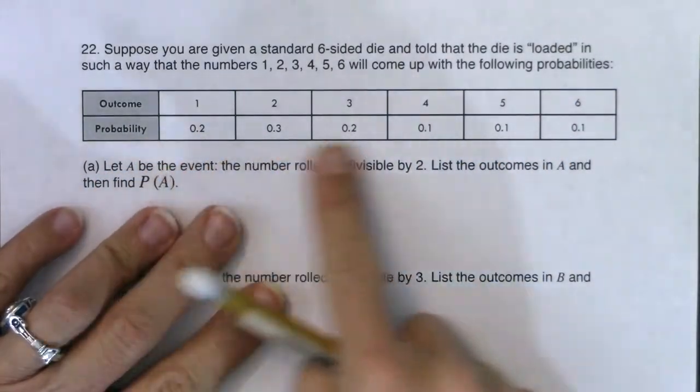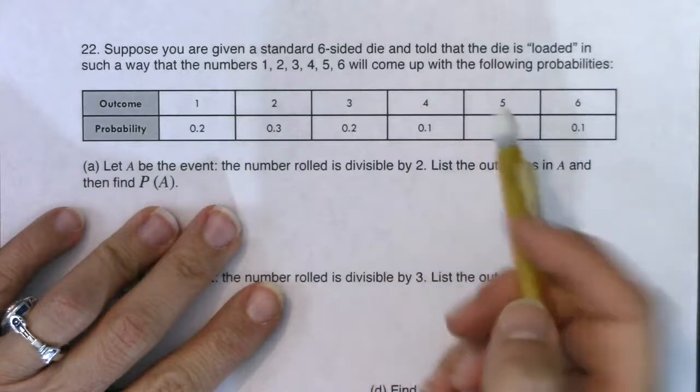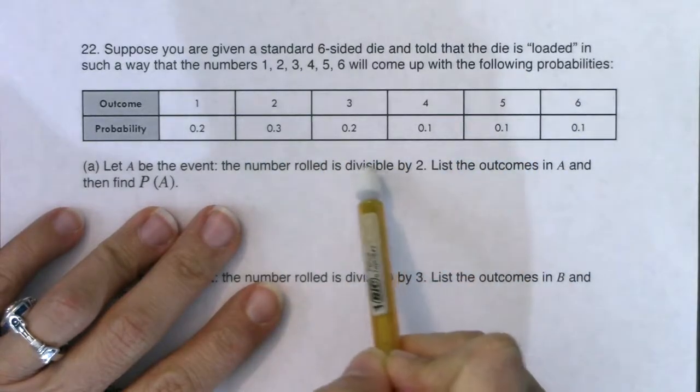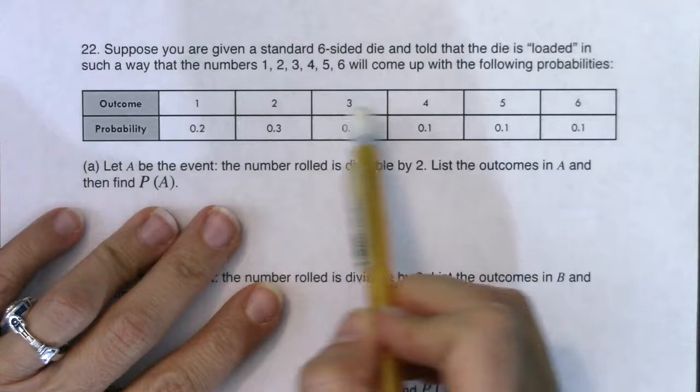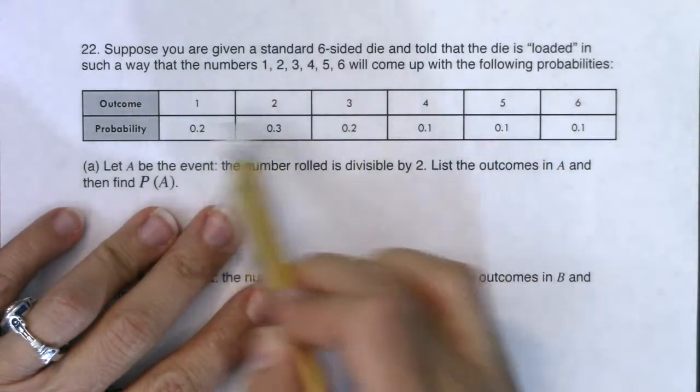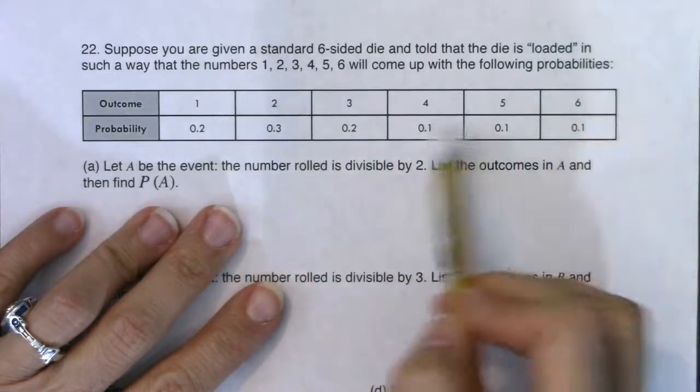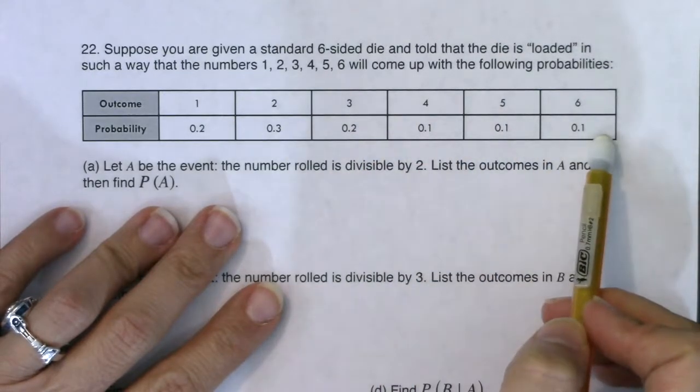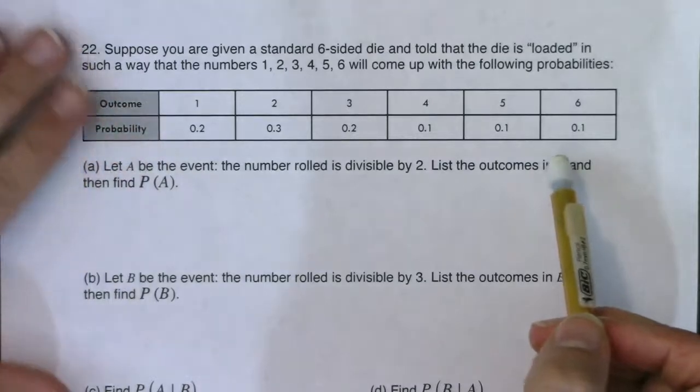So you can see I have a little bit of a loaded die. I'm more likely to roll a two than anything else. I'm more likely to roll a one and a three when compared to a four, five, or six. So it looks like one, two, threes are loaded heavy, four, five, six are loaded light. Okay, no problem. Let's see what we got to do with this loaded die.